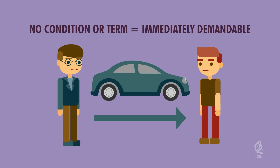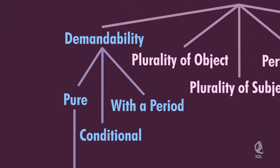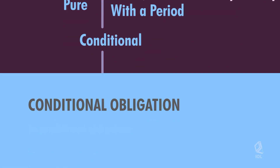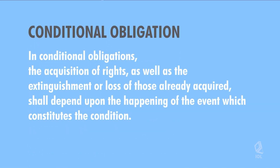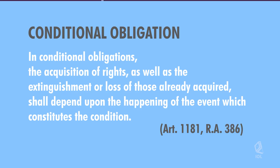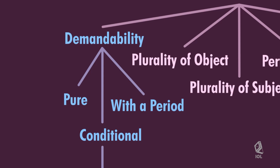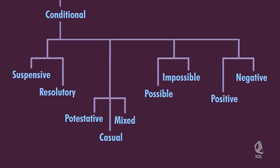To understand more, let's expand our learnings about conditional obligation and obligation with a period. In conditional obligations, the acquisition of rights as well as the extinguishment or loss of those already acquired shall depend upon the happening of the event which constitutes the condition. Classifications of conditional obligations include: as to effect — suspensive and resolutory; as to cause or origin — potestative, casual, and mixed; as to possibility — possible and impossible; as to mode — positive and negative.